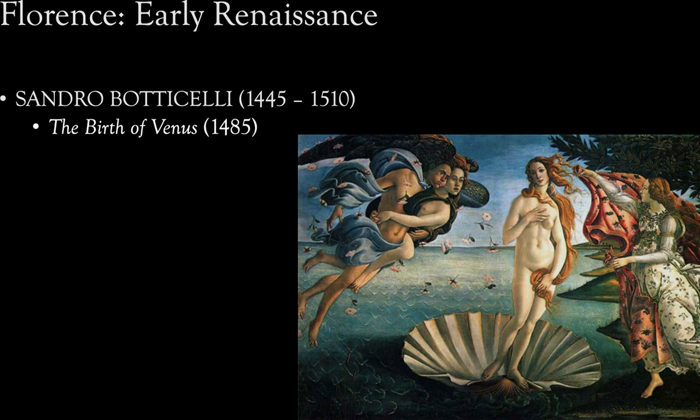Notice how Venus is standing off-center, with her weight shifted onto one hip or one foot. This is another new artistic technique called contrapposto — C-O-N-T-R-A-P-P-O-S-T-O — which is the idea of humans standing more naturally. Humans don't stand straight forward with arms at the side like a paper doll; they tend to have their weight on one leg, or a hand on their hip. This is another example of incorporating realistic ideas into Renaissance art.